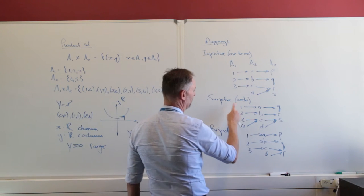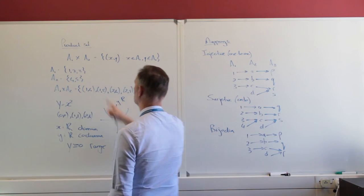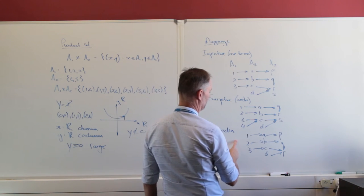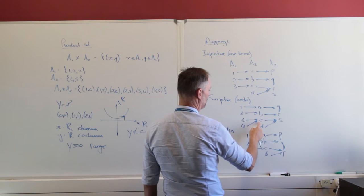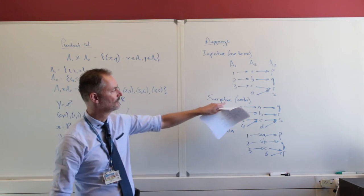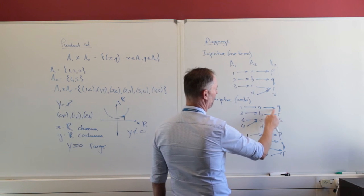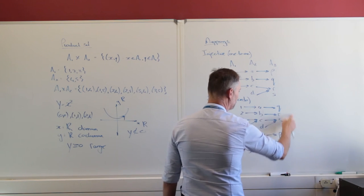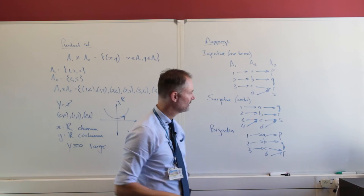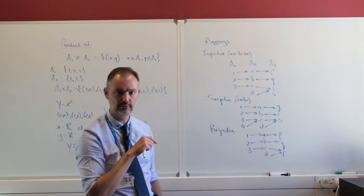Let's look at a surjective, or onto, mapping. That says every element in the codomain must have at least one element from the domain mapping to it. Looking at A sub 1 to A sub 2: A has one, B has one, C has two, but D has nothing — so that cannot be surjective or onto. Now looking at A sub 2 to A sub 3: every element in the codomain has at least one element in the domain mapping to it, so A sub 2 to A sub 3 is a surjective or onto mapping.